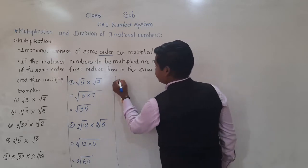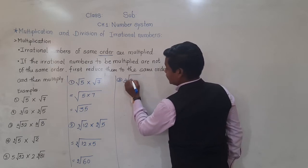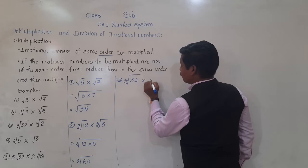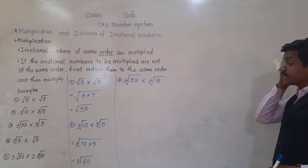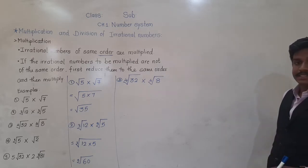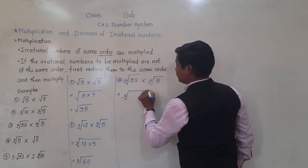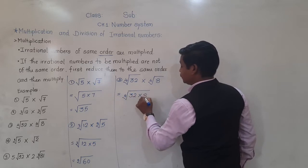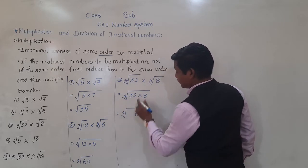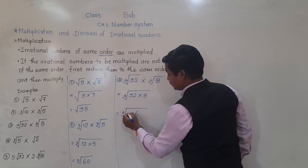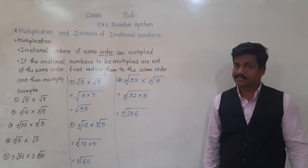Third example: fourth root of 32 into fourth root of 8. Here also both irrational numbers have the same order, that is 4. So if order is same, we can multiply: 32 into 8. 32 times 8 is 256. So the answer is fourth root of 256.